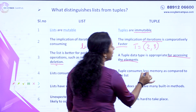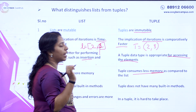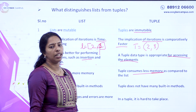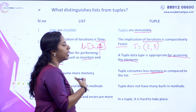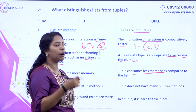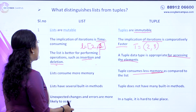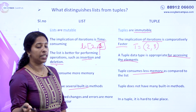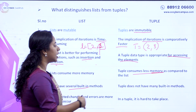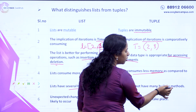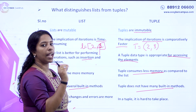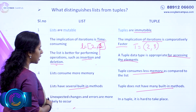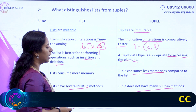We need less memory in a tuple because we allocate memory more efficiently. There are several built-in methods for lists because we need to insert, update, and change many elements. We need to access fewer methods in a tuple. Unexpected changes and errors are more likely to occur with lists.